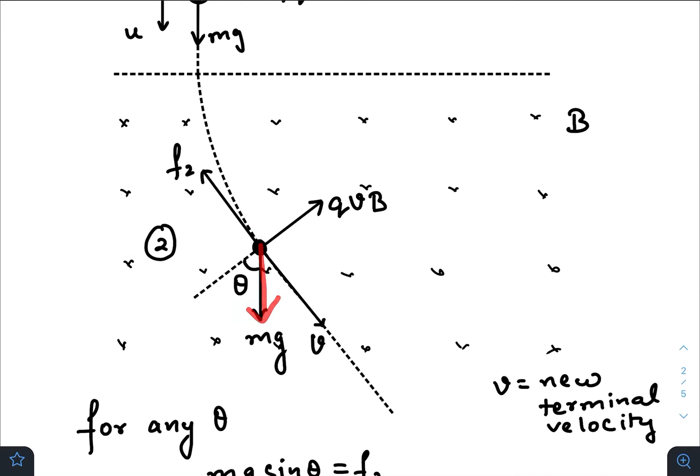So the forces that are acting on the ball are the gravitational force, the magnetic force that is qvB, and in the tangential direction the new resistive force f2. Because the speed has changed, the new resistive force would be f2 where v is the new terminal velocity.